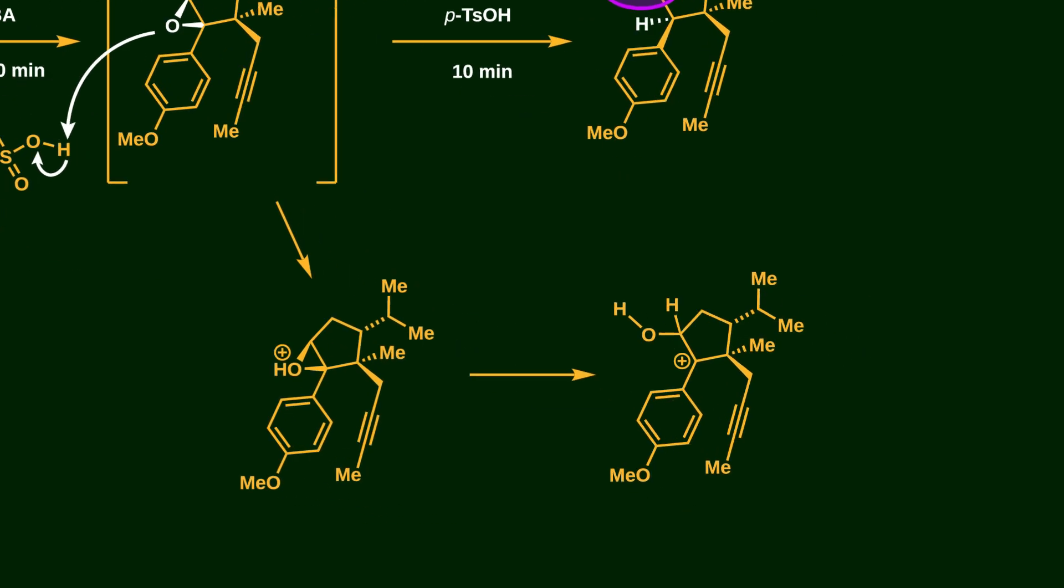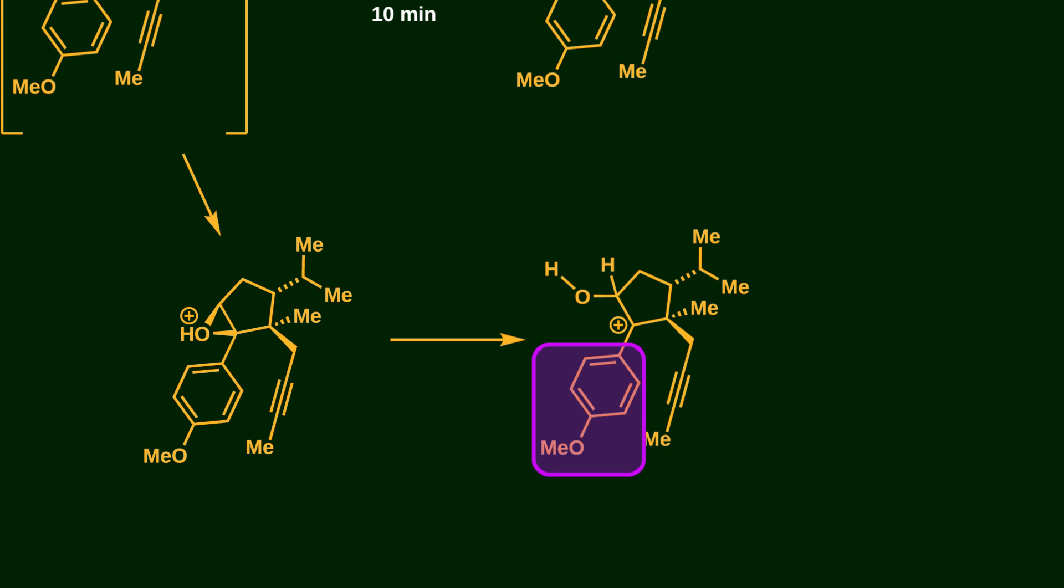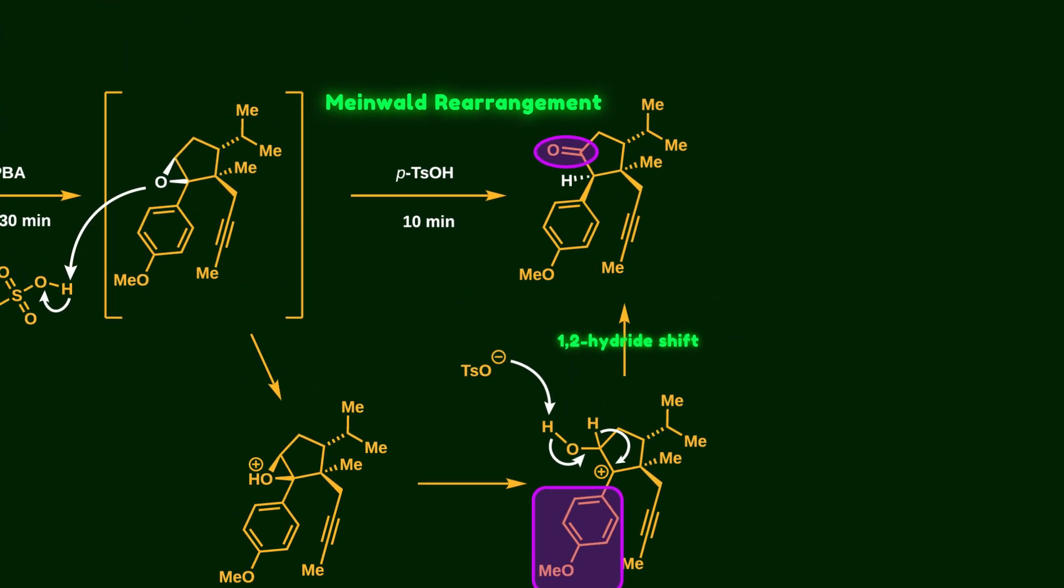First, the oxygen atom is protonated by p-toluenesulfonic acid, which leads to ring opening and creation of the carbocationic center. This carbocation is stabilized by the aromatic ring. After that, the tosylate ion takes back the hydrogen and the bonding electrons are moved into the carbon-oxygen bond. Then a 1,2-hydride shift occurs, which gives us the ketone functional group.